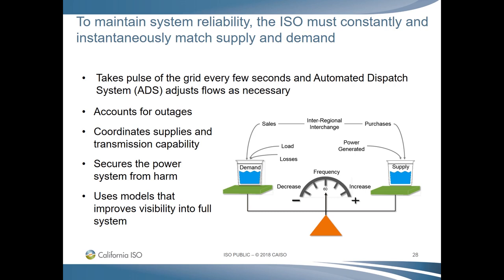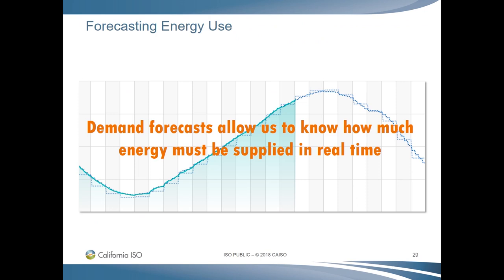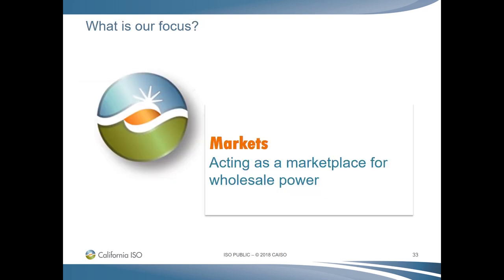The ISO uses technology that takes the pulse of an electric system every second, and our highly skilled system operators constantly monitor multiple bits of data so they can instantly react to fluctuating conditions such as weather changes and sudden supply shortfalls or surpluses. Greater diversity of resource types strengthens our ability to meet demand. However, that creates challenges when it comes to forecasting supply availability of variable energy resources such as wind and solar. So how do we know how much energy will be needed? Through demand forecasts done in advance, sometimes up to two years in advance.